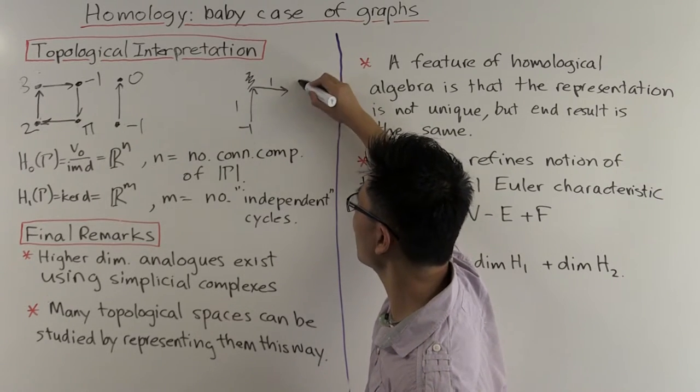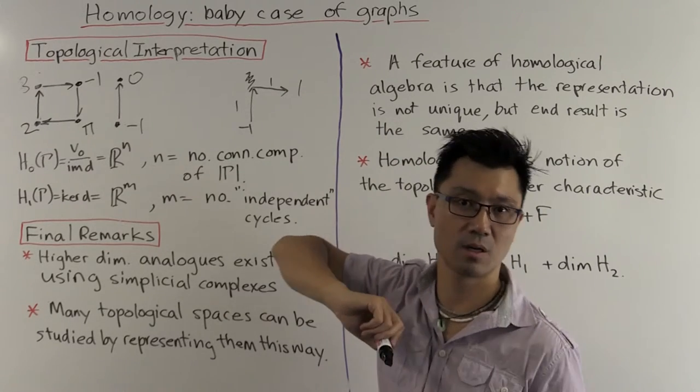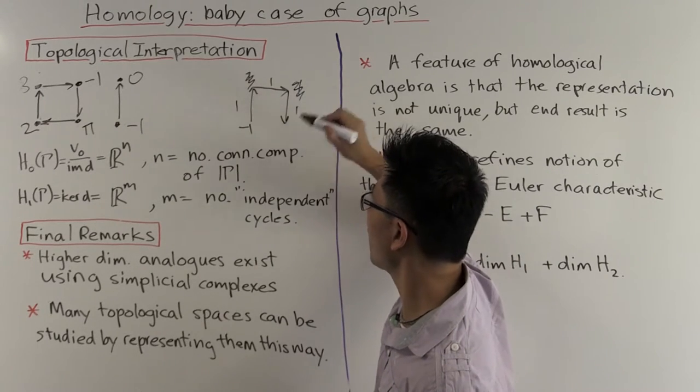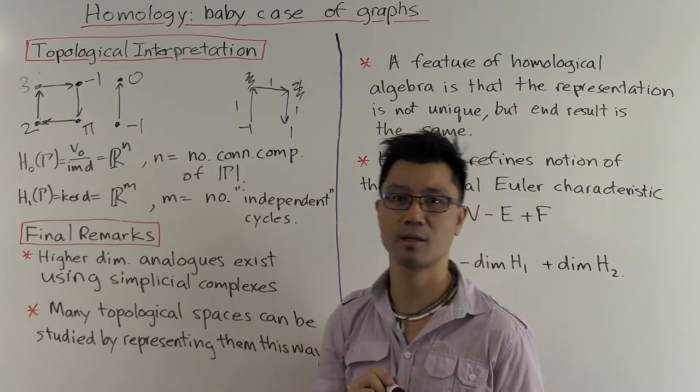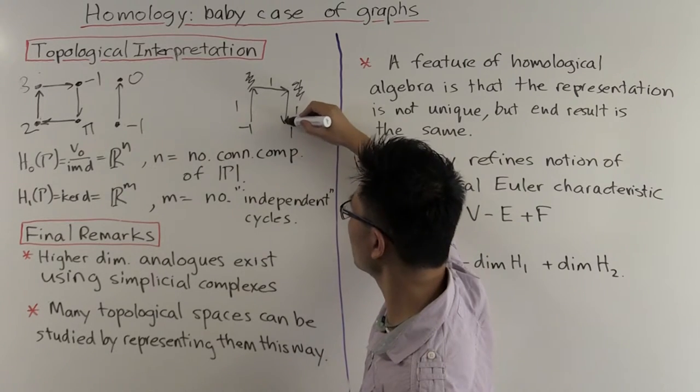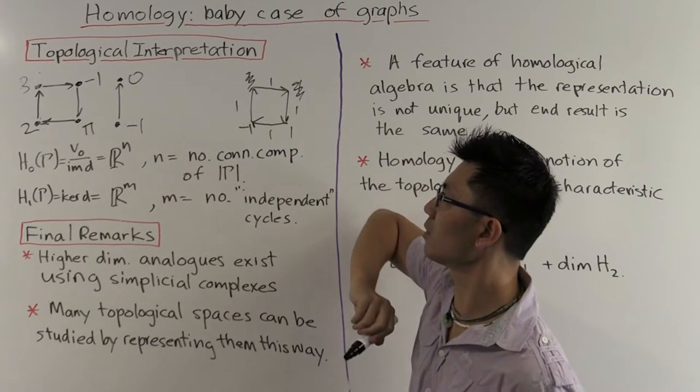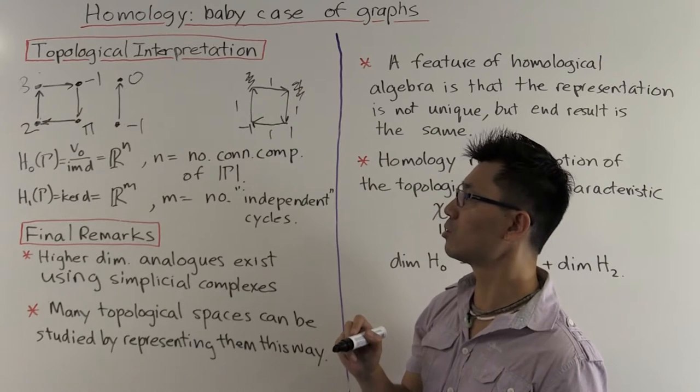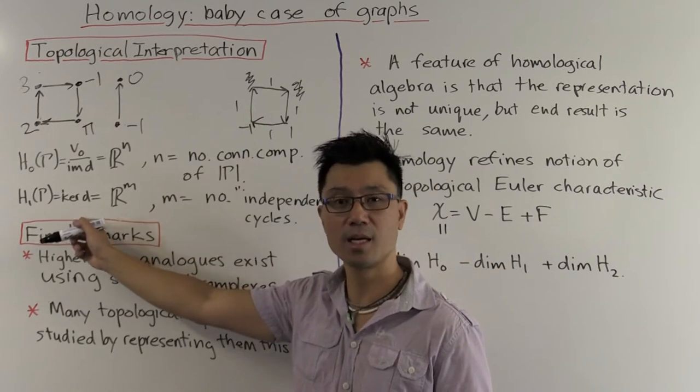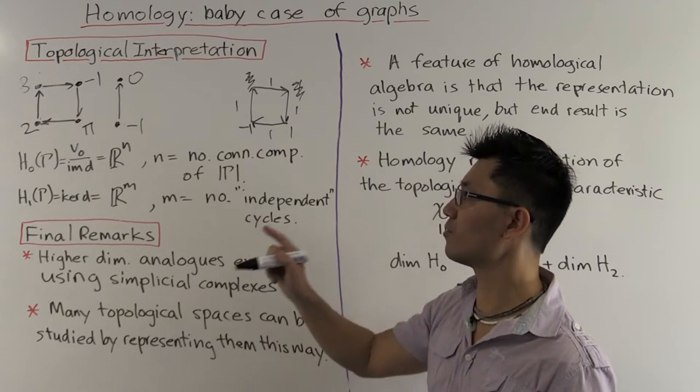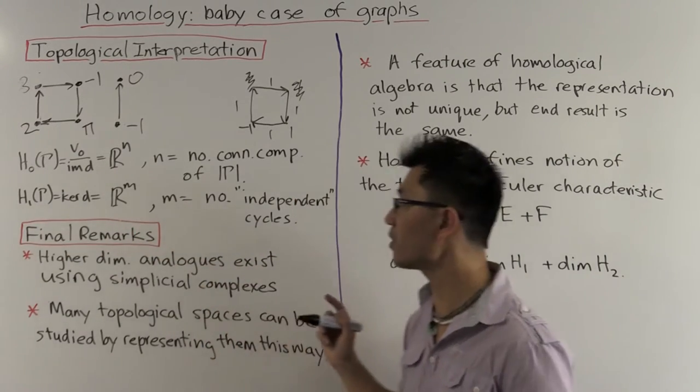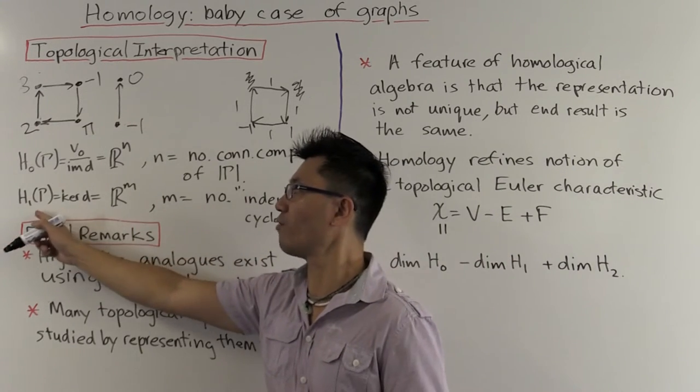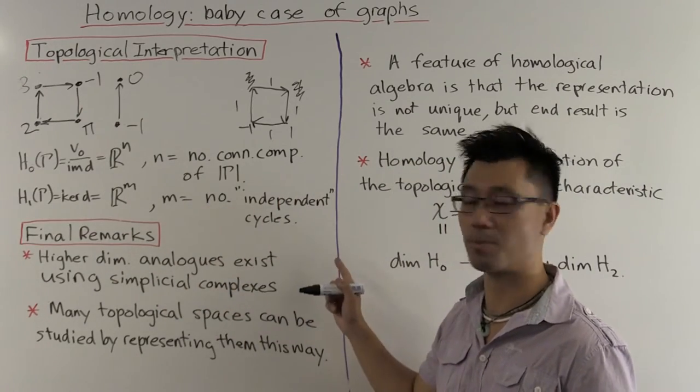But we have an extra head here. So we need to cancel this. And to cancel this, we need a tail of an edge. So we add that one here. That will cancel that. And that leaves a one here. And then to cancel this one and this one, we can do that with a single edge, this one here. So this single cycle here turns out to give an element inside here. And that's how a cycle gives you an element of h1. And it turns out that in fact, this describes all of h1. It's R to the m where m is the number of independent cycles.